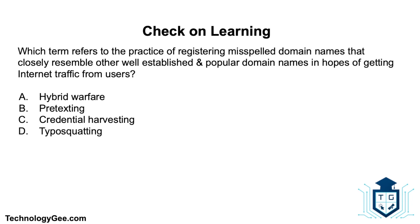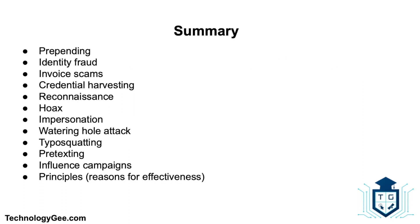Question three: Which term refers to the practice of registering misspelled domain names that closely resemble other well-established and popular domain names in hopes of getting internet traffic from users — hybrid warfare, pretexting, credential harvesting, or typosquatting? The correct answer is typosquatting. For example, a typosquatter might register a site like 'technologyggg.com' or 'technologygeee.com' with an extra letter, capturing traffic meant for the legitimate site.